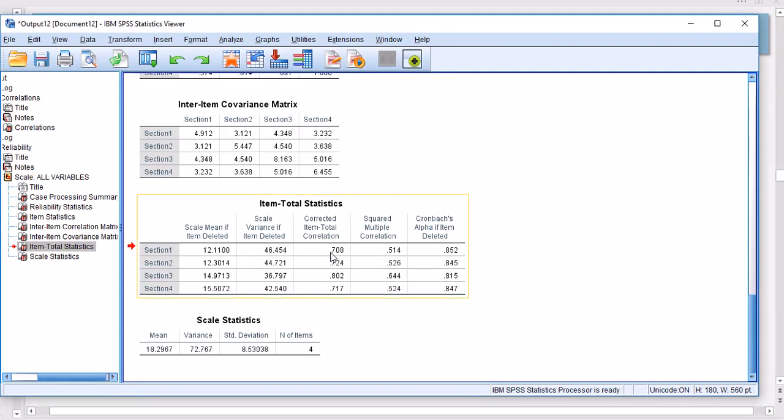For the corrected item-total correlation, the definition is that this is a correlation between this item, that's section 1, and the scale score that excludes this item itself. So we get a correlation of 0.708, and for this one we get 0.724, and so on. Now if we look at the squared multiple correlations, you'll get 0.51 for the first item, and that's actually the correlation of this item with the rest of the items squared, that's something like a coefficient of determination or R squared.